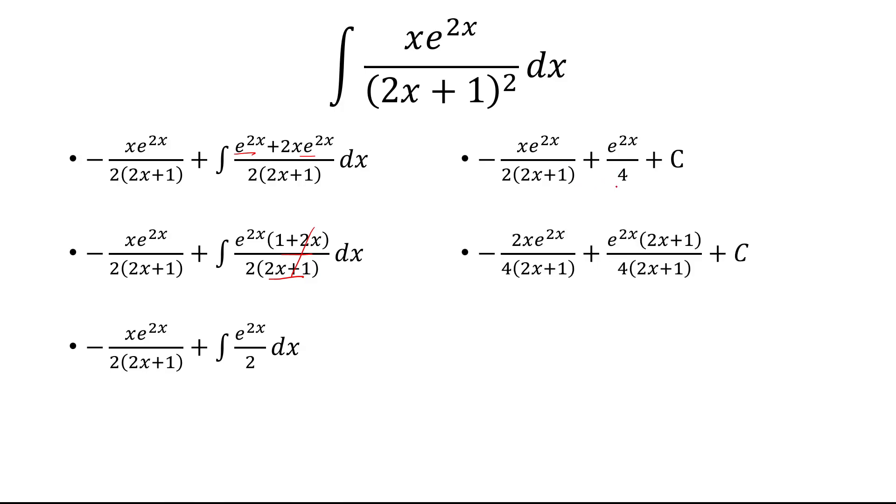So I'm going to choose to get a common denominator. The common denominator is 4 times 2x plus 1. So that involves multiplying the first fraction by 2 over 2, the second fraction by 2x plus 1 over 2x plus 1.